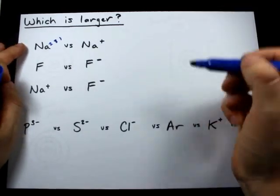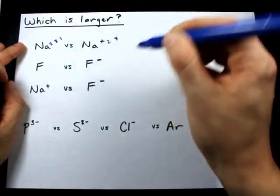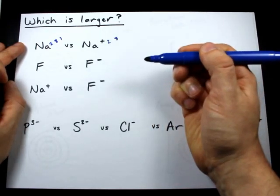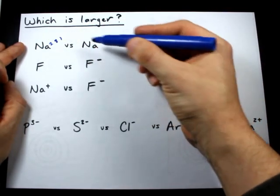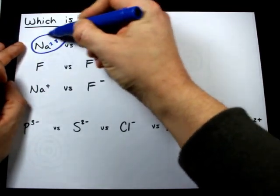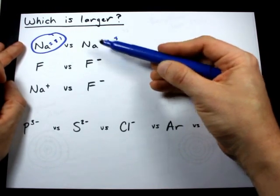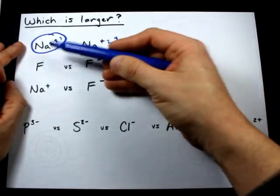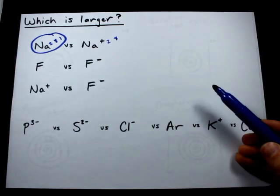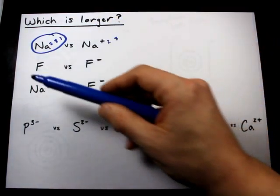The sodium plus ion has lost that outer electron, and so only has two occupied shells. The one with more shells will be larger, and so Na is larger. In fact, all cations, to my knowledge, are smaller than the pure elemental form of the atom that has no charge.